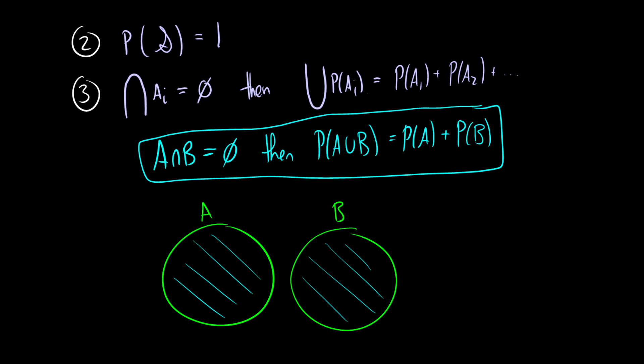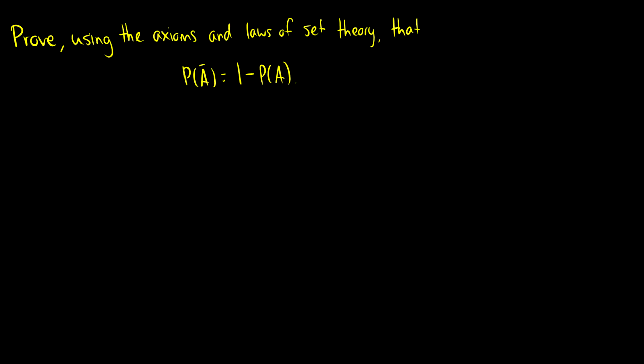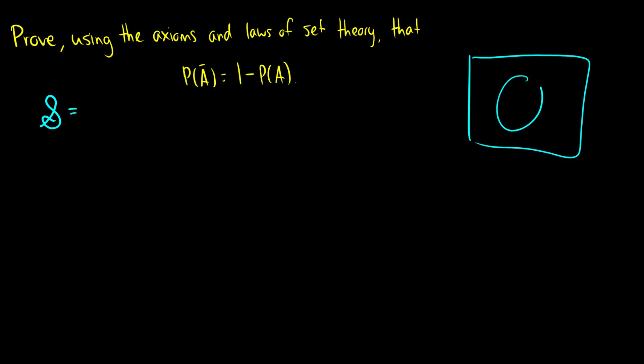Using these three axioms we're going to prove the complement rule: that P(A-bar) equals 1 minus P(A). First, we want a sample space. If we have one event A, we can say this is A, and we have A-bar on the outside, and this whole thing is the sample space. So we know that the sample space S equals A union A-bar.